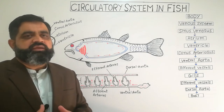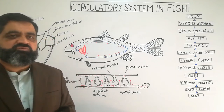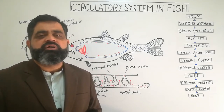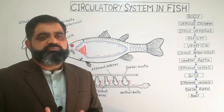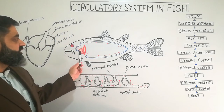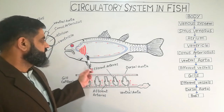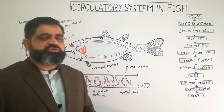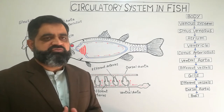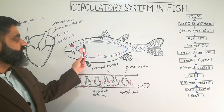The ventral aorta takes this deoxygenated blood into the gills. Gills are special organs located at the anterior region of the body, just behind the mouth. Water flows over the surface of the gills, and since water contains a rich amount of oxygen, this oxygen diffuses into the blood of the fish. After the blood becomes oxygenated, it exits the gills via the dorsal aorta, which transports oxygenated blood to all parts of the body through the arterial system.